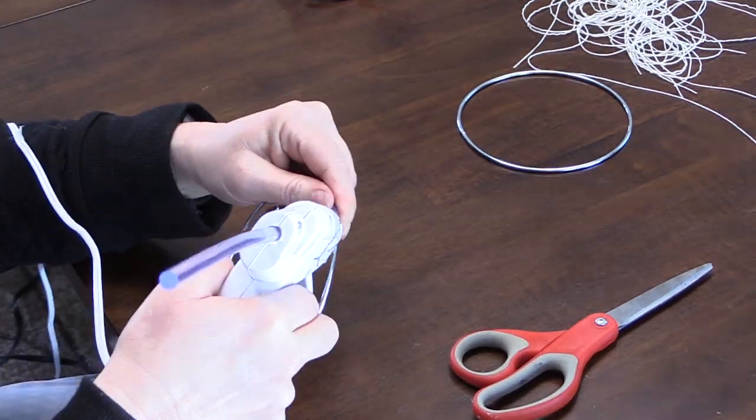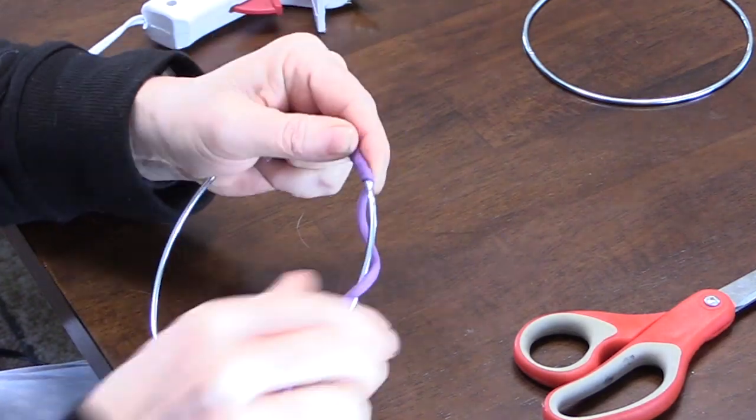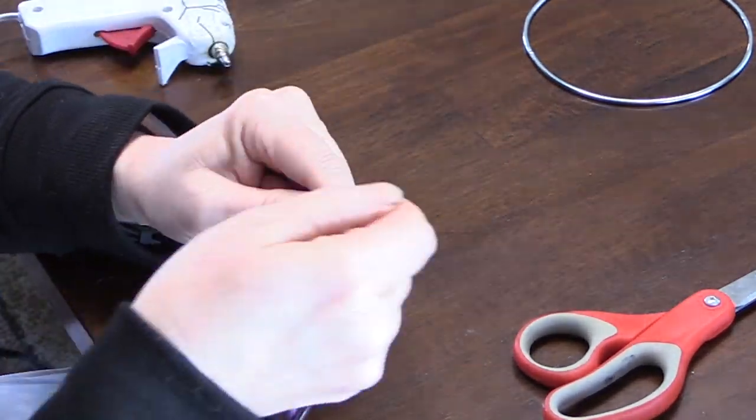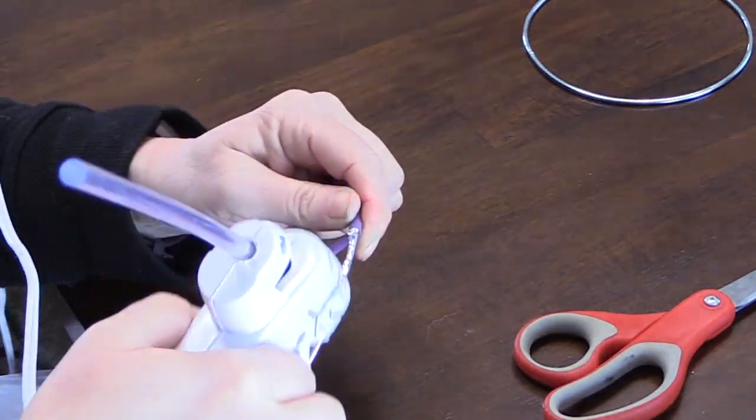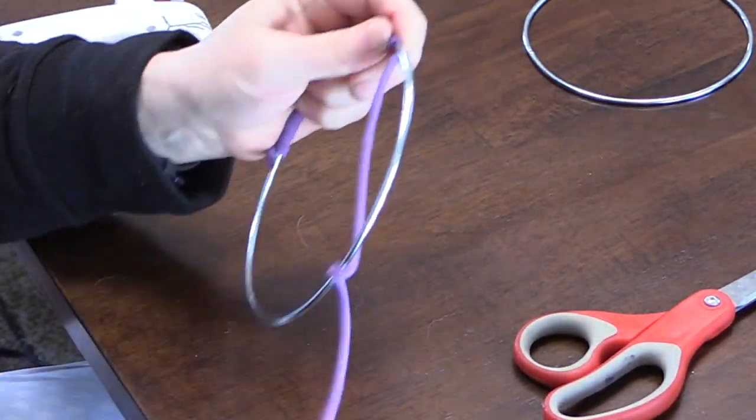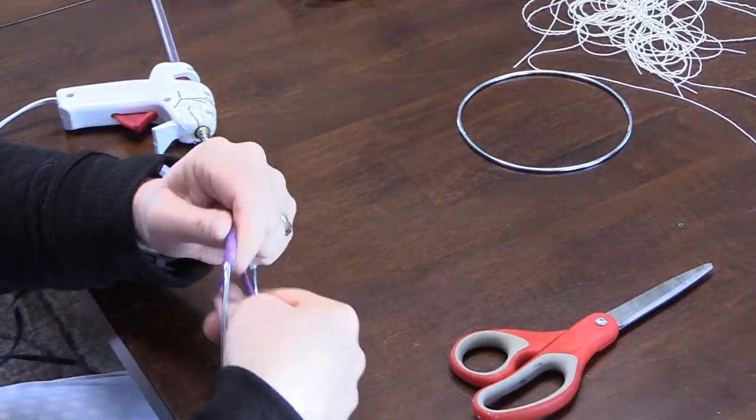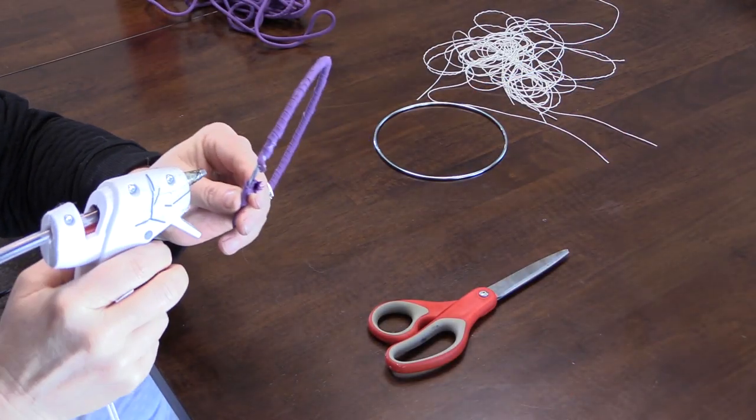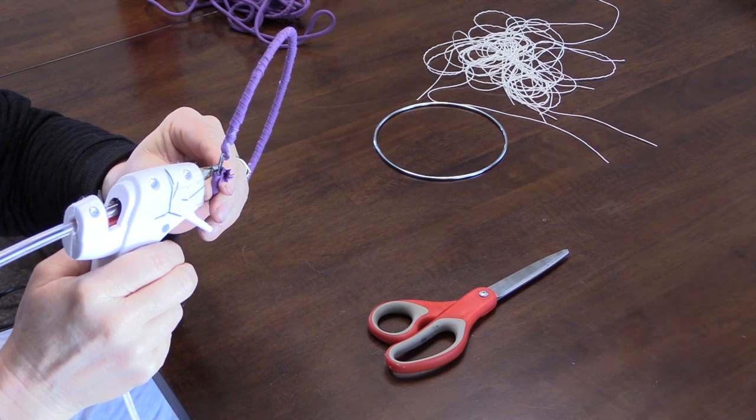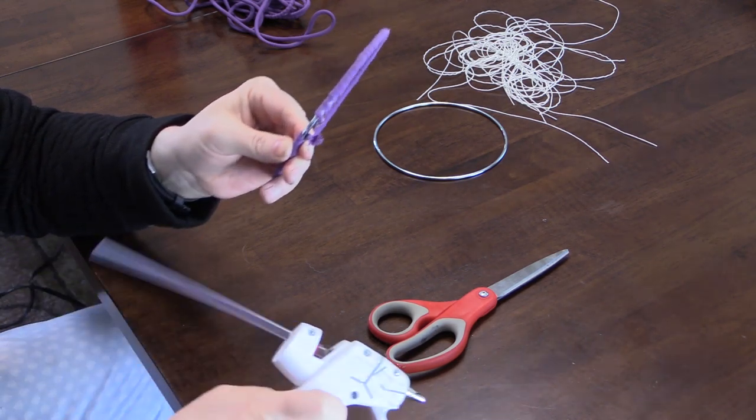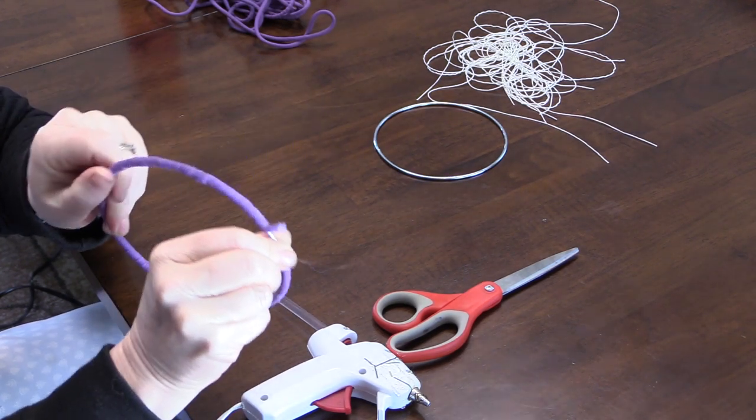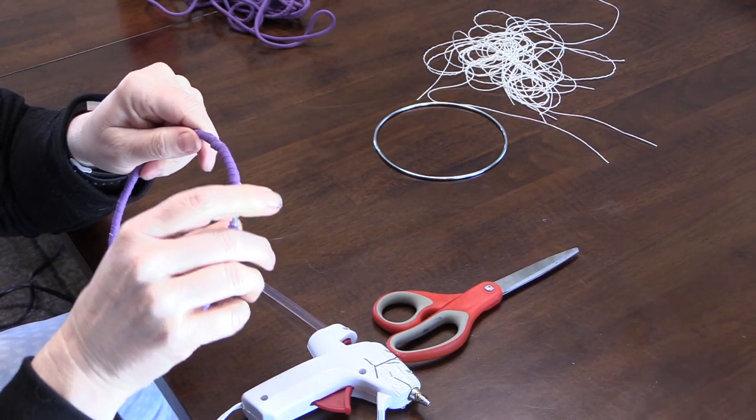And then once you're at the end of the ring with your paracord or whatever you're using, just use a little bit of glue and seal that little end to the ring. And now we have pretty much the beginning of our dream catcher, which is this purple ring.